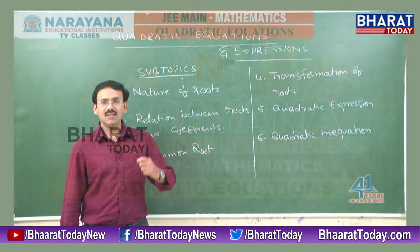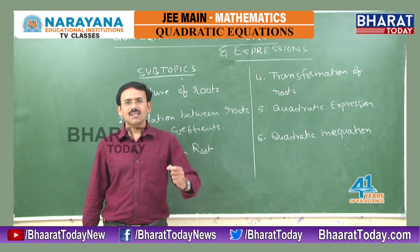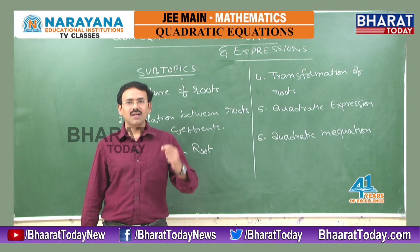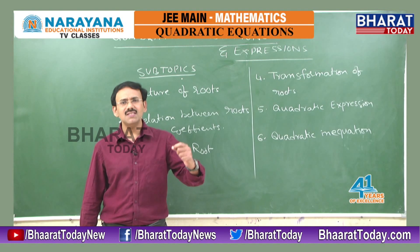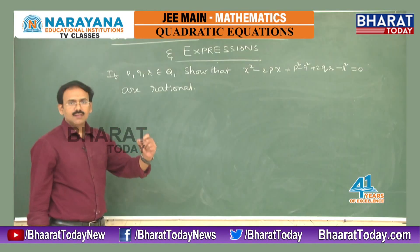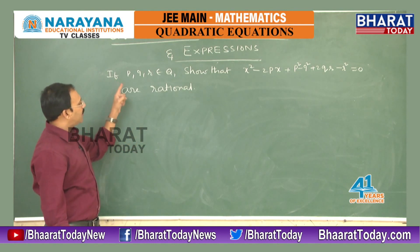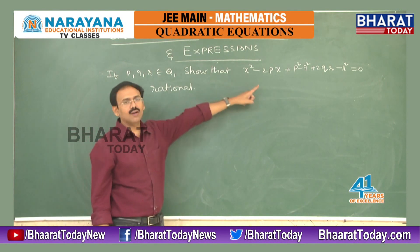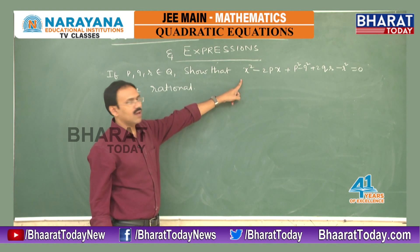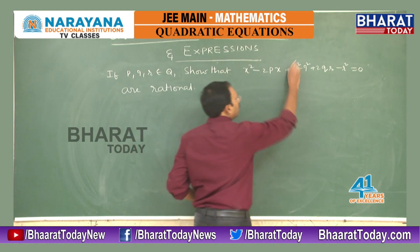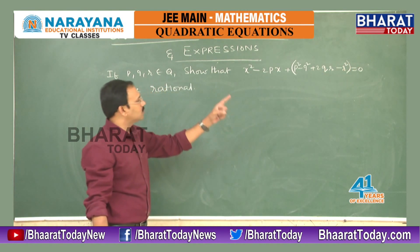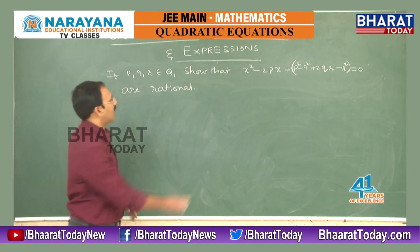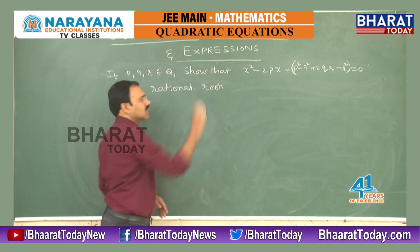It is rightly said that Ganita Shastra Adhyayanam Apata Madhuram Adhyanta Sukhadam — many impossible and difficult problems of arithmetic are easily dealt with by algebra. The question is: if P, Q, R are rational numbers, show that the quadratic equation X² - 2PX + (P² - Q² - 2QR + R²) = 0 has rational roots. We have to prove that this equation has rational roots.